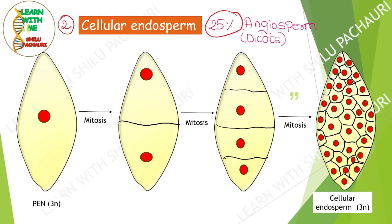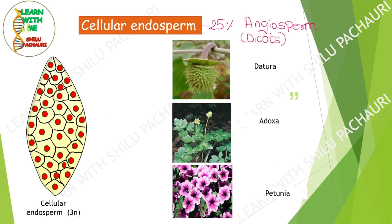The second type of endosperm is cellular endosperm, which can be seen in around 25% of endosperms and is mostly found in dicots. Here, the primary endosperm nucleus divides mitotically, and immediately after each cell division, it is followed by cell wall formation. So from the very beginning the endosperm is cellular — that is why the name is cellular endosperm. Unlike nuclear endosperm where cell wall formation happens last, here it happens from the start. Examples of plants showing cellular endosperm are Datura, Adoxa, and Petunia.